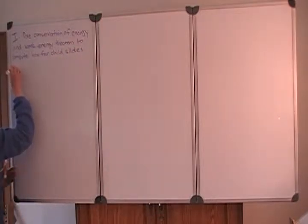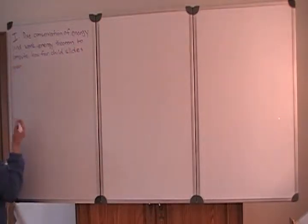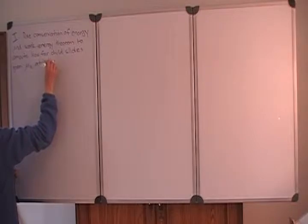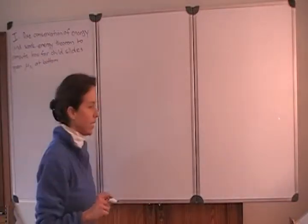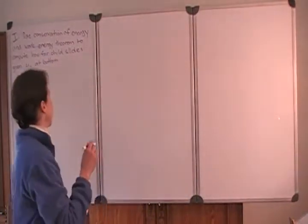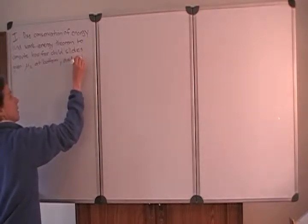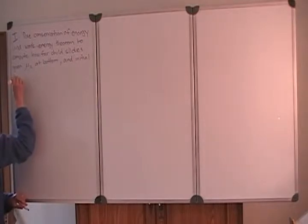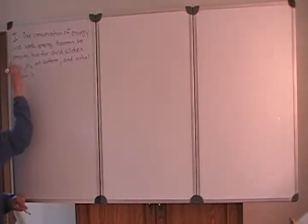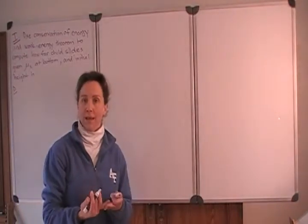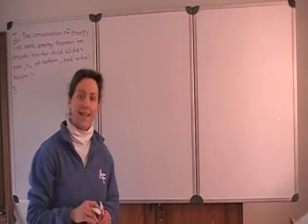What are we given? We're given the coefficient of friction — the kinetic coefficient of friction at the bottom — and we're also given the height of the hill. And that's it. That doesn't sound like much, does it? But we can go forward and draw a diagram and make a plan, and see if there's other information we might need to get.